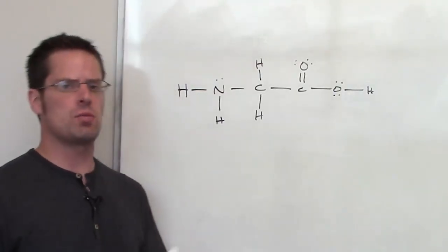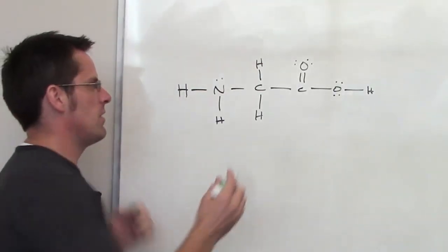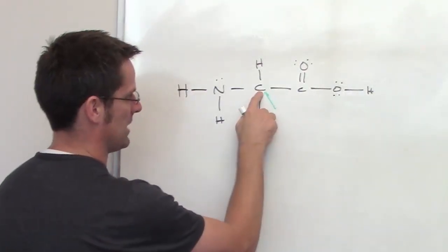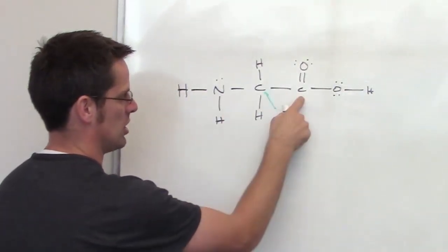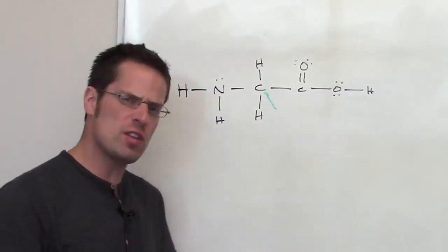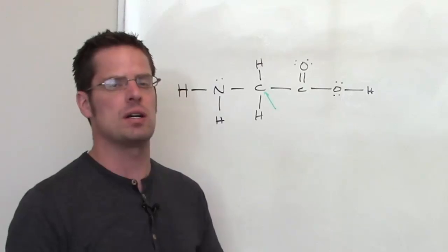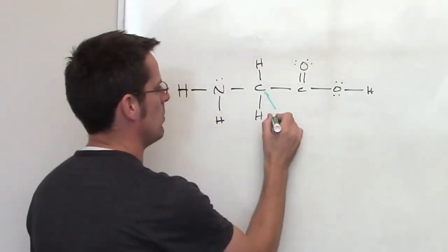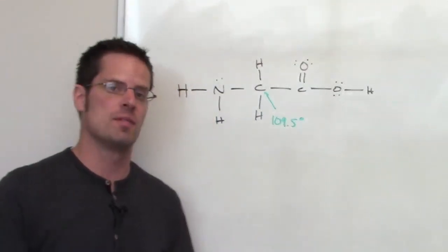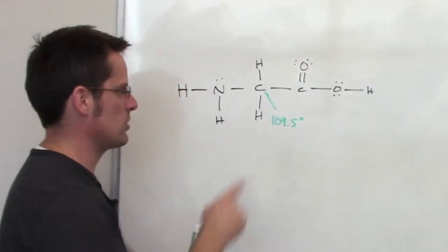Now as we talked about in an earlier lecture, if I've got four things, let's start with this carbon atom right here, it has four things around it: hydrogen, hydrogen, nitrogen, carbon. If I've got four things around a central atom, what's the furthest it can get those four things apart? Well the answer is about 109.5 degrees in 3D. That is a tetrahedral geometry around that center.